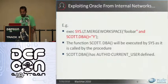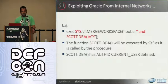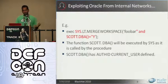For example, SYS.LT.MergeWorkspace was one such procedure. You inject the string semicolon and Scott.DBA equals Y. Essentially, the function Scott.DBA which you created then executes with the privileges of SYS, and hence the user Scott ends up with DBA privileges. It is important to know that Scott.DBA must have AuthID current_user defined. If you don't define this in your function, then Scott.DBA will be executed with Scott's privileges, which you probably don't want.